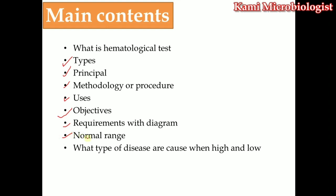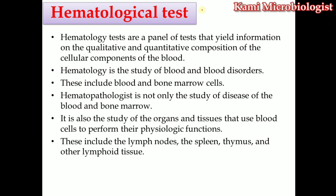There are different tests that have normal ranges. If the values of a hematology test rise above the normal range, it can cause different types of disease. Similarly, if the values fall below the normal range, we will also discuss what type of disease results. We are going to talk about each of these things in detail, including for what purpose doctors mostly recommend these different types of hematology tests.